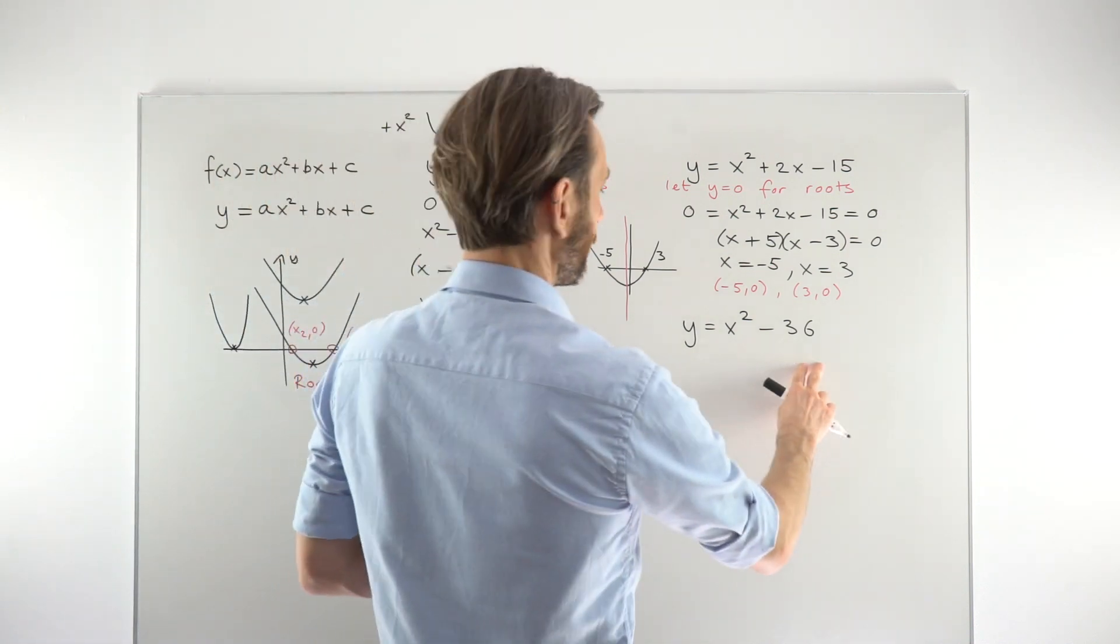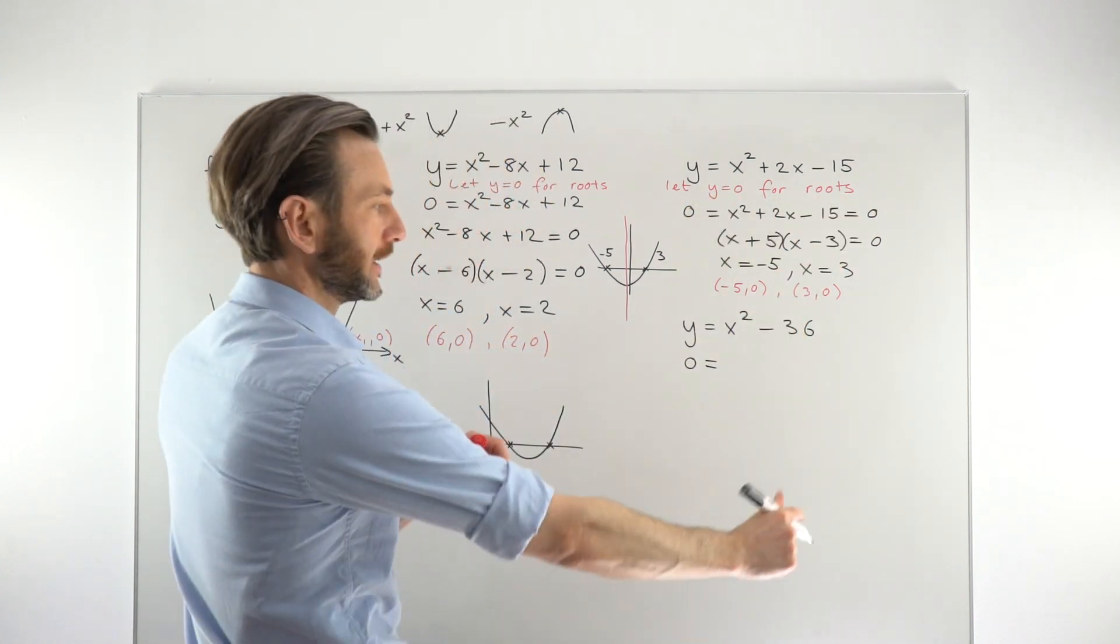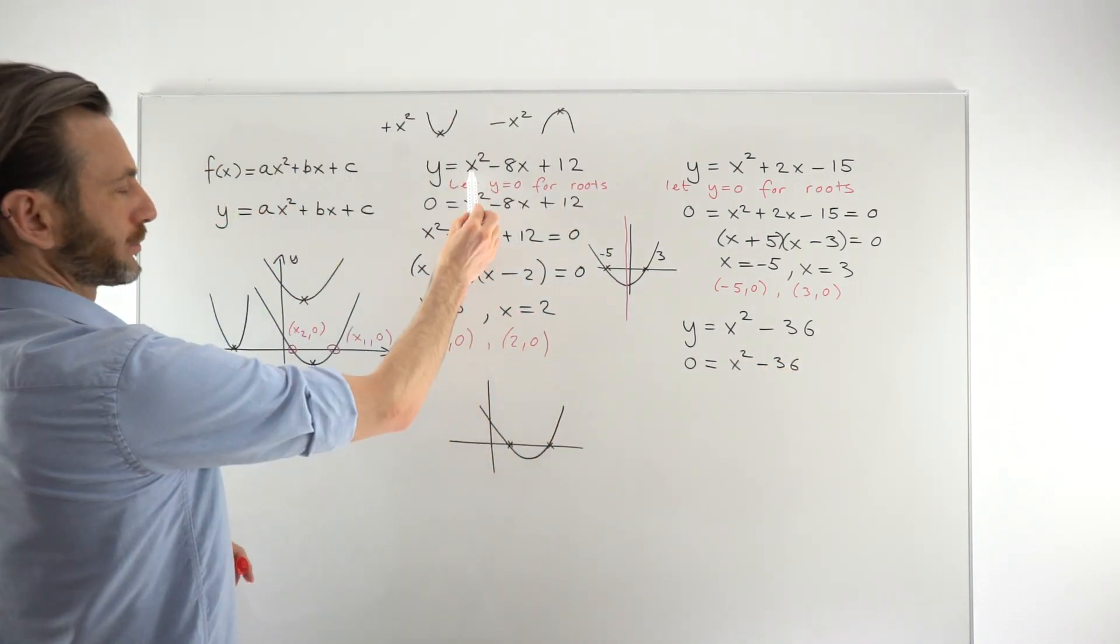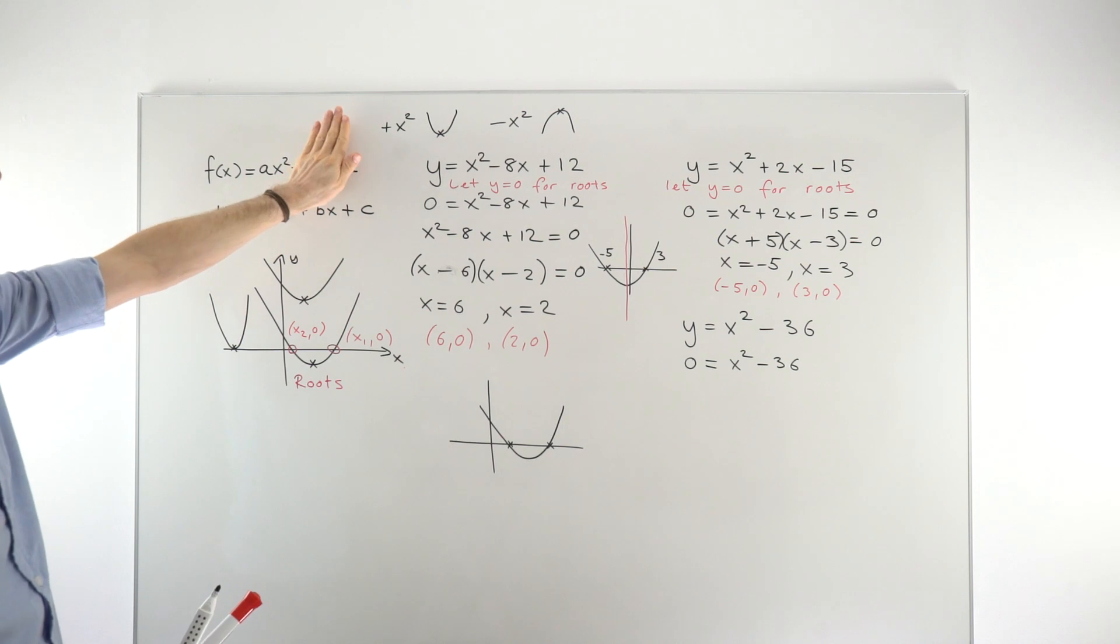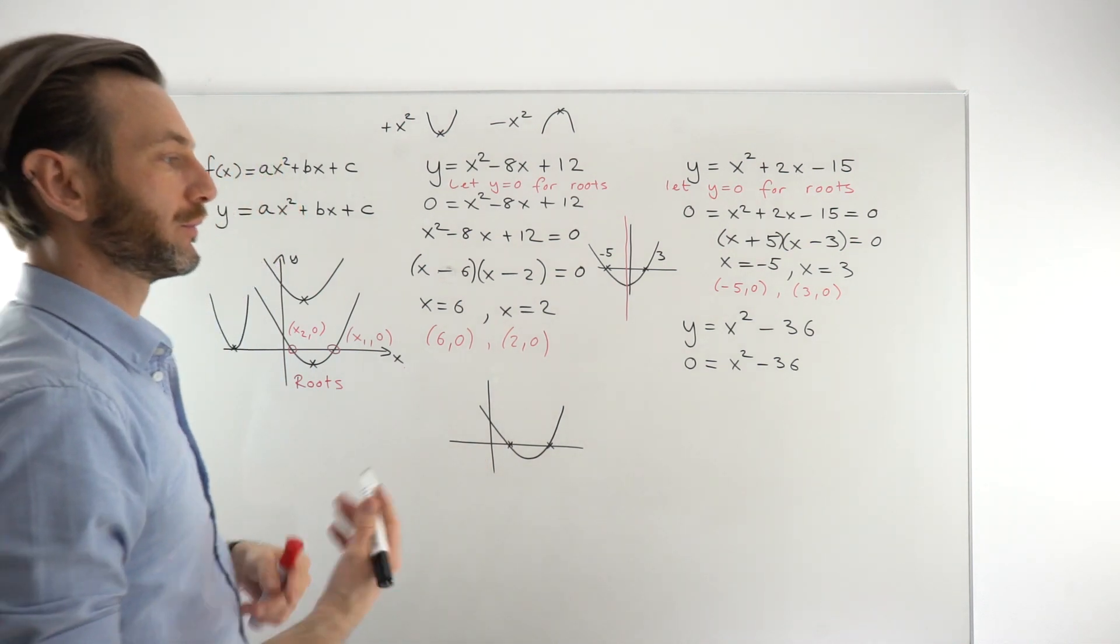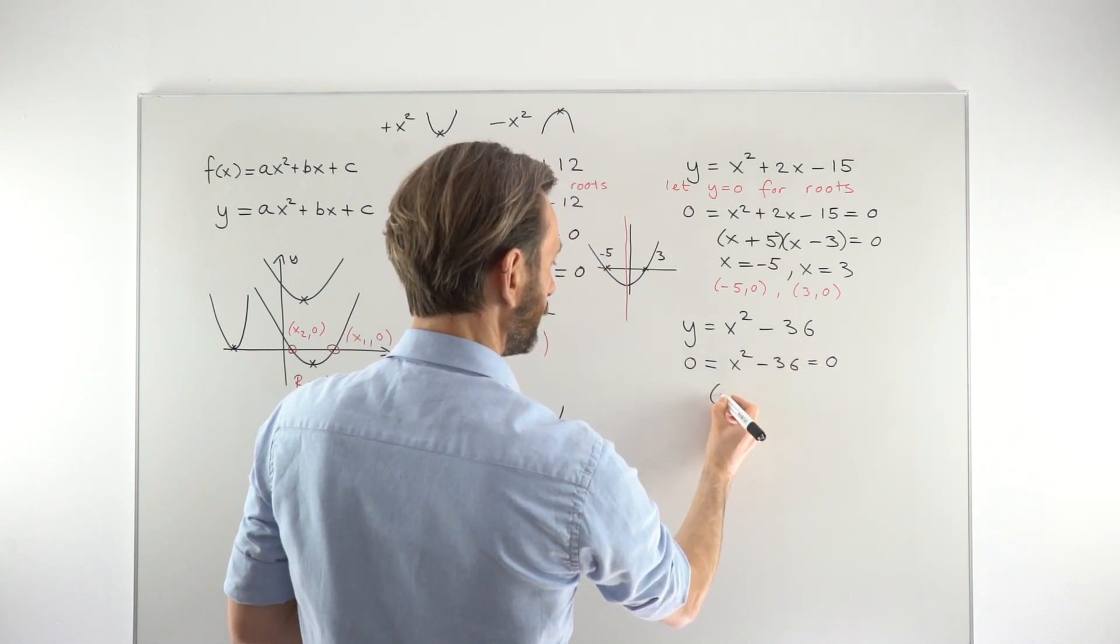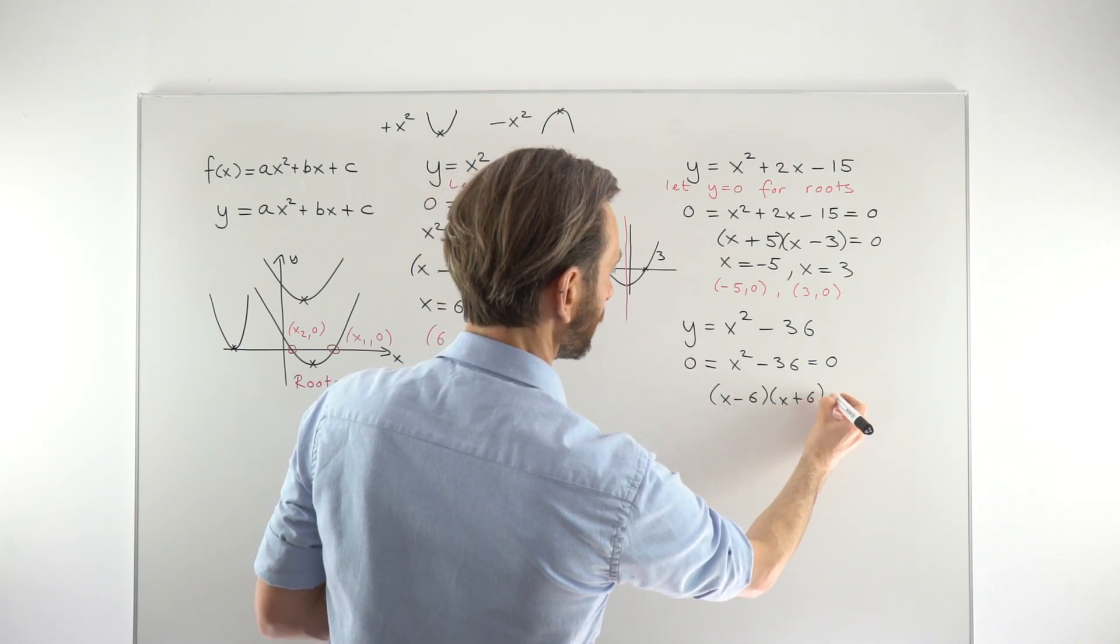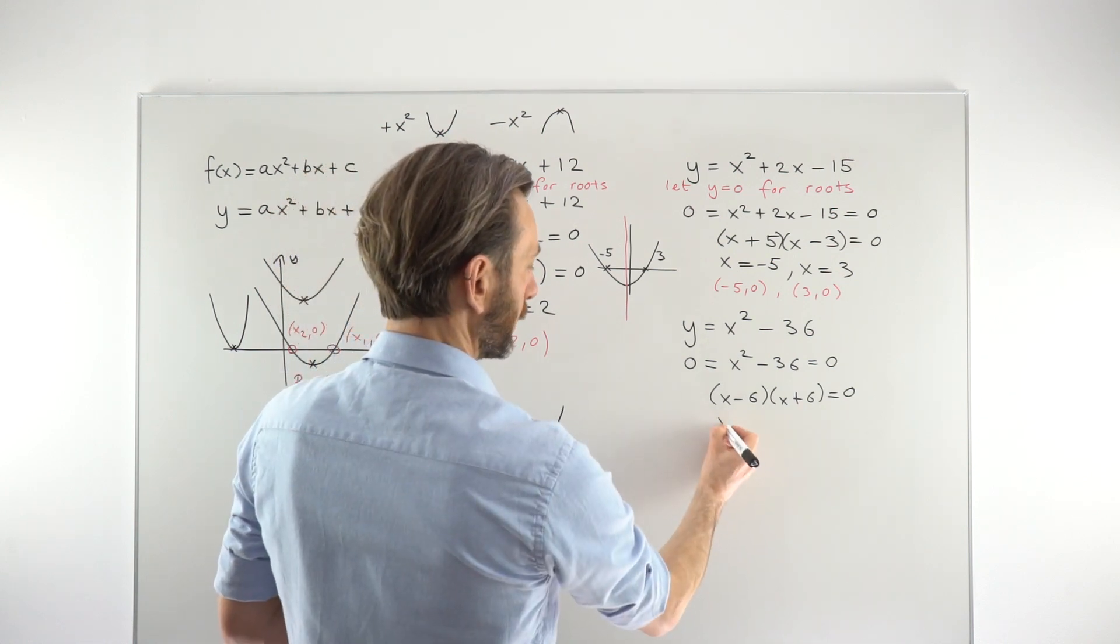Finally, let's take a look at this guy. We're going to do the same thing again. We're going to sub in 0 for y. Slightly different, this one, in the sense that we don't have a trinomial. The b is 0 and then the c is negative 36. It just means that when we factorize it, we factorize in a different way. This one's actually a difference of squares, another factorization technique. It looks like this. And we would get two solutions: x equals positive 6 and x equals negative 6.